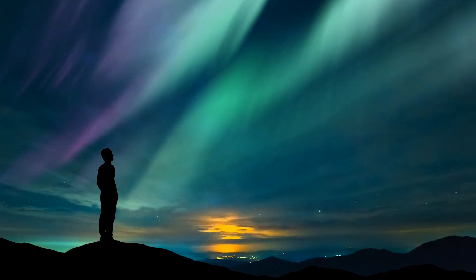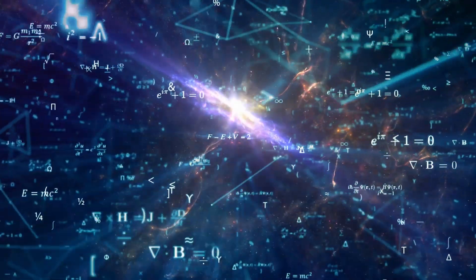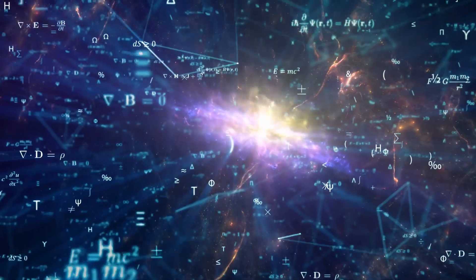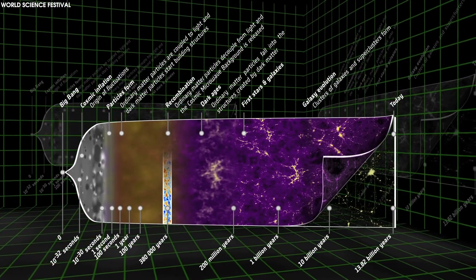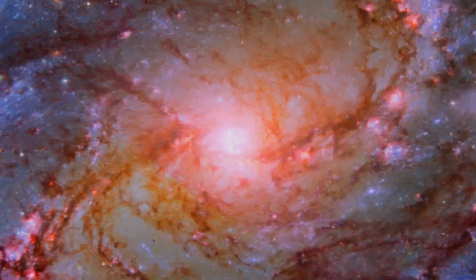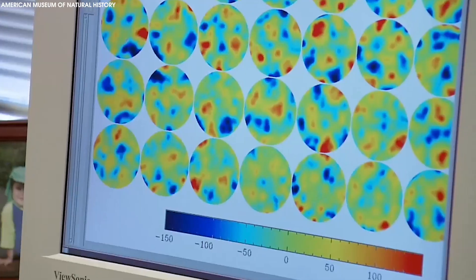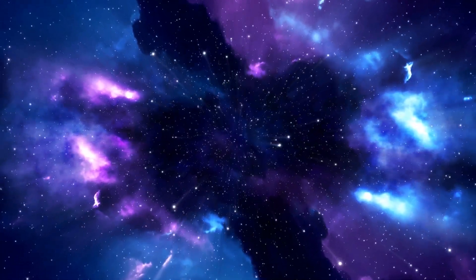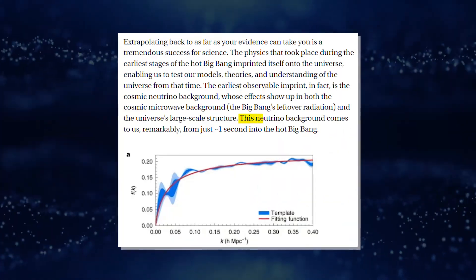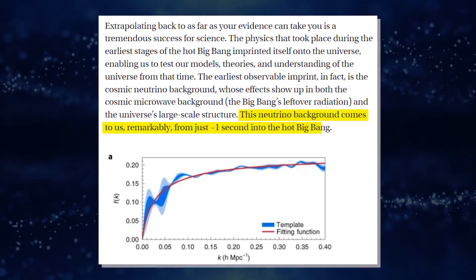Extrapolating back to as far as your evidence can take you is a tremendous success for science. The physics that took place during the earliest stages of the hot Big Bang imprinted itself onto the universe, enabling us to test our models, theories, and understanding of the universe from that time. The earliest observable imprint, in fact, is the cosmic neutrino background, which effects show up in both the cosmic microwave background, the Big Bang's leftover radiation, and the universe's large-scale structure. This neutrino background comes to us, remarkably, from just less than one second into the hot Big Bang.